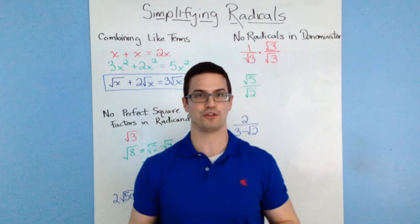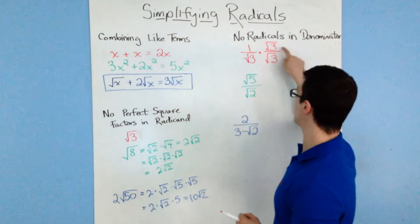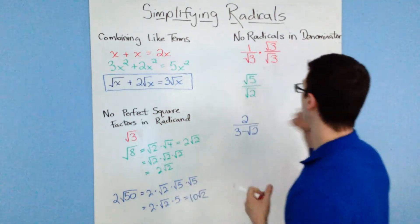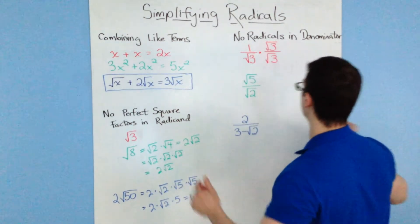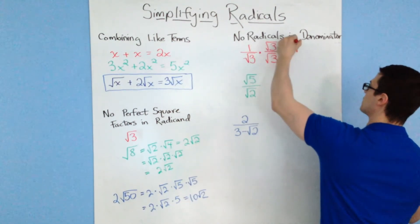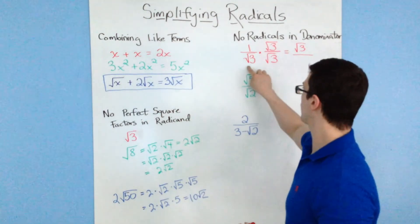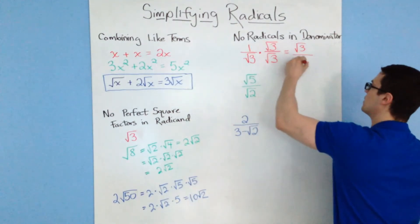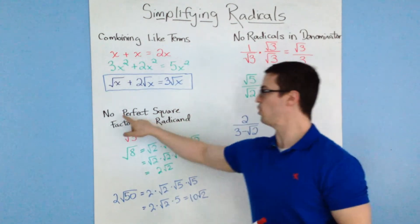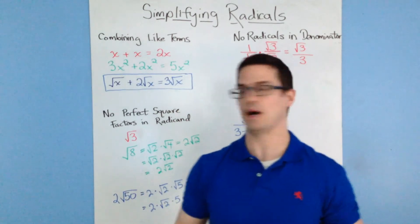Think of it like simplifying fractions: 2 over 4 equals 1 over 2 because you divide top and bottom by 2. As long as you multiply by the same number on top and bottom, you're multiplying by 1 and not changing the value. Multiplying across gives 1 times root 3 equals root 3 on top, and root 3 times root 3 equals 3 on the bottom. This is simplified because there are no radicals in the denominator and 3 is prime, so no perfect square factors.